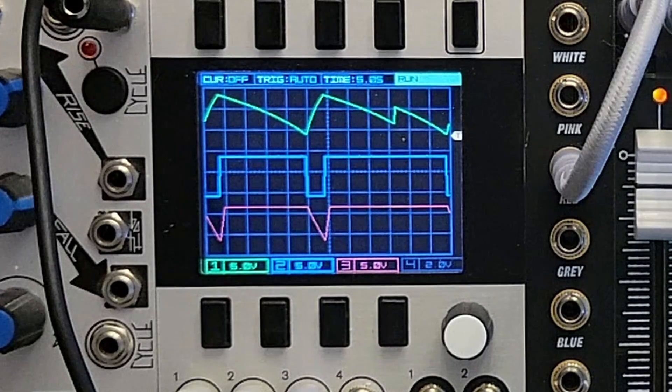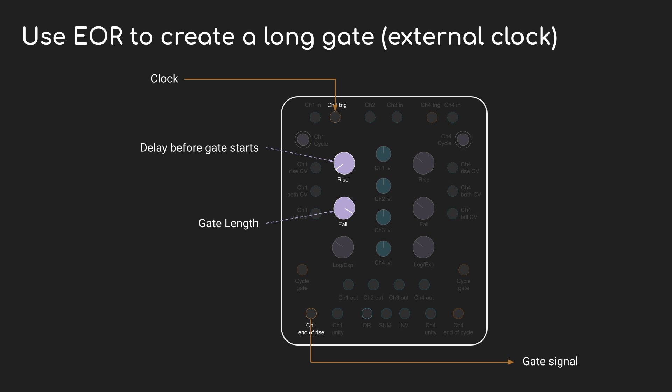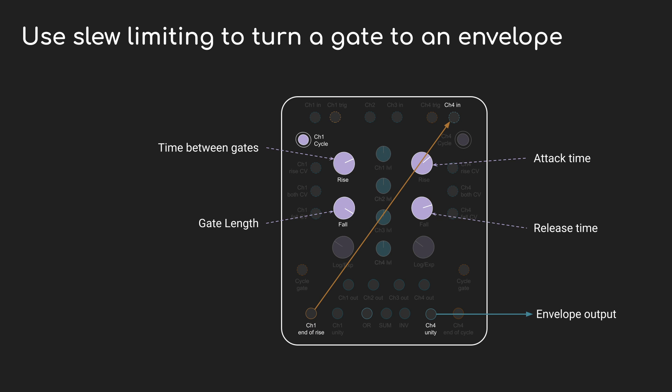That video is just a big jumble of patch cables, so let's look at a diagram. In this first version, I'm assuming that Maths is also acting as the clock, so we'll turn on the cycle button. The rise time is the time that the EOR is going to be low — that's the time between the notes. And the fall time is the length of the note while the gate is high. But if you wanted to clock this externally, you can just use the trigger input. In that case, the rise time becomes a delay between when the trigger comes in and the note starts. If you don't want a delay, just turn it all the way down. The important part is that the gate comes out of the end of rise.